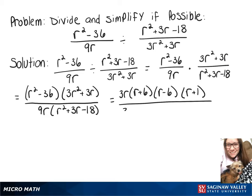On the bottom I'm going to rewrite that 9r as 3r times 3, and then we have a quadratic that we'll factor into r plus 6 times r minus 3.